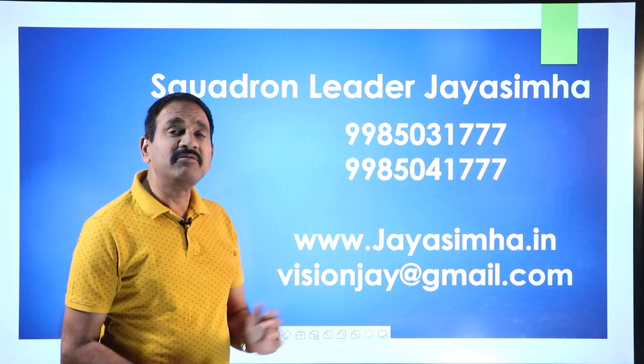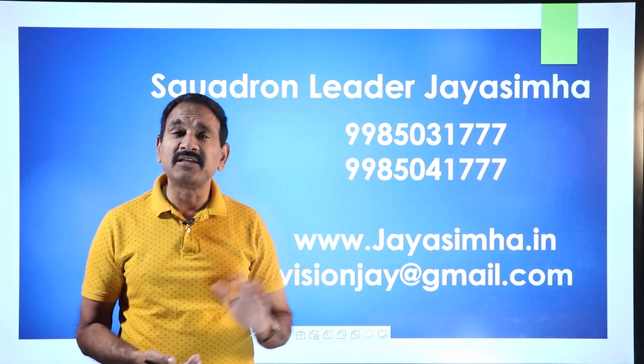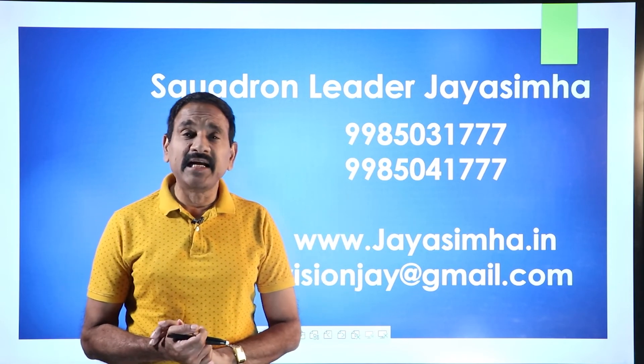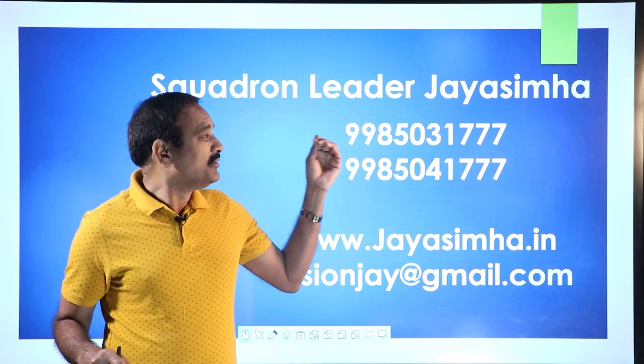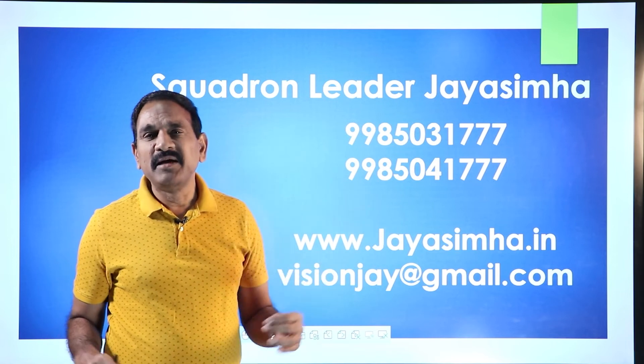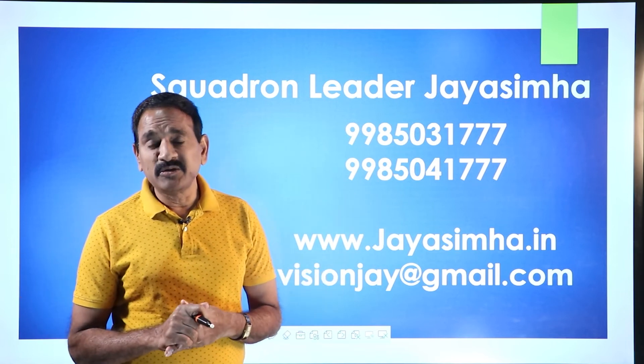And then you can mail me at visionj@gmail.com. Or you can call us for well-planned numbers. Double line 850-3177. Double line 850-4177. Or you can just go to Google and check my name. And I will be there more than willing to help you.